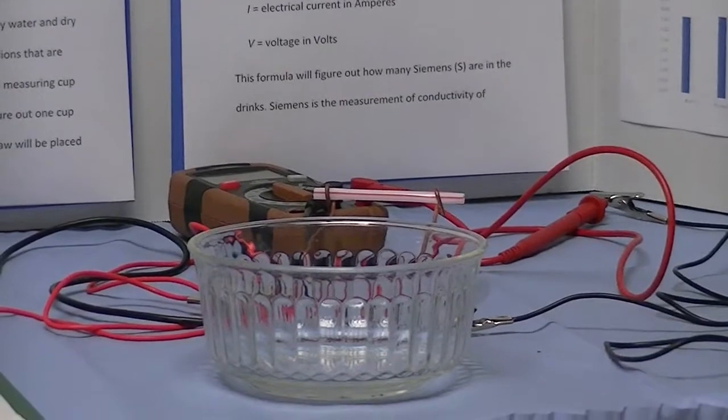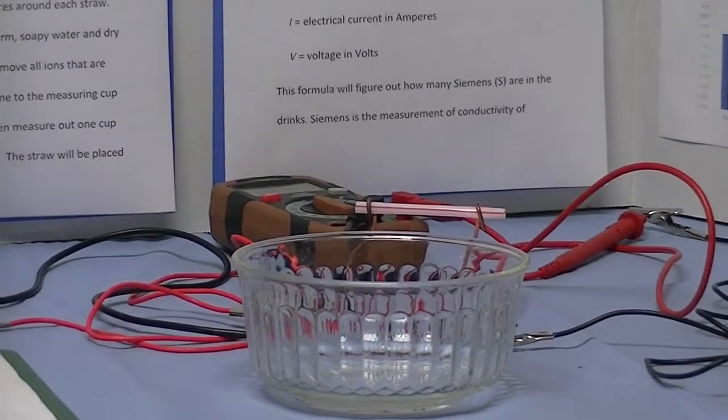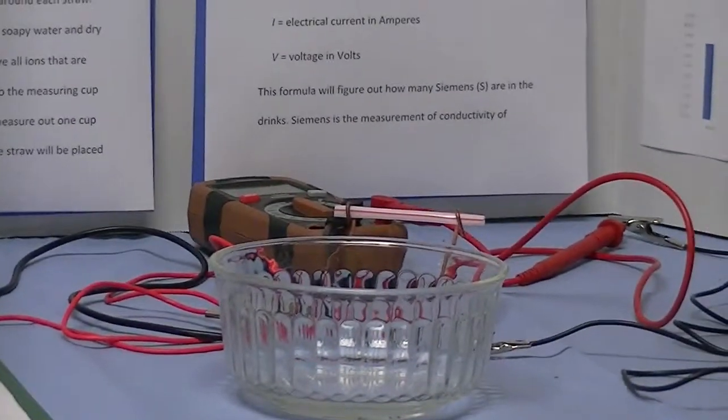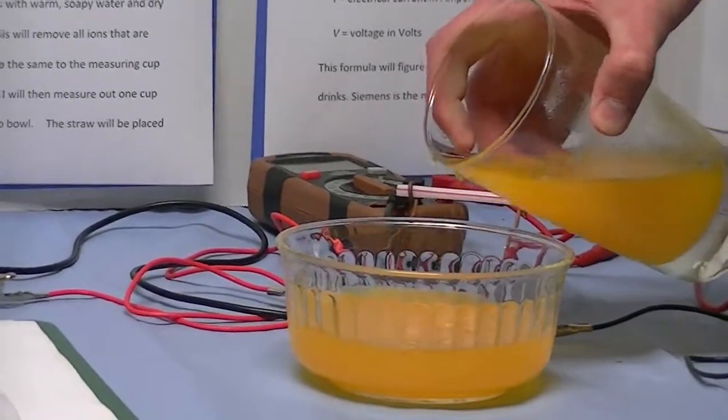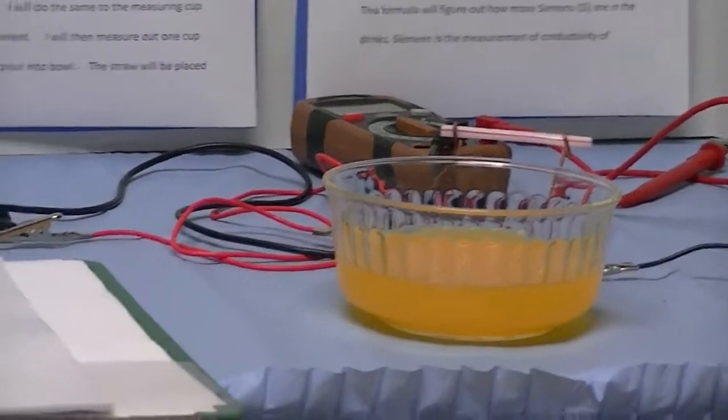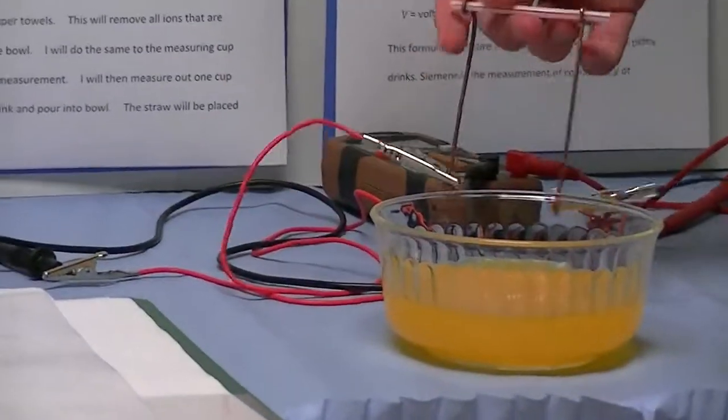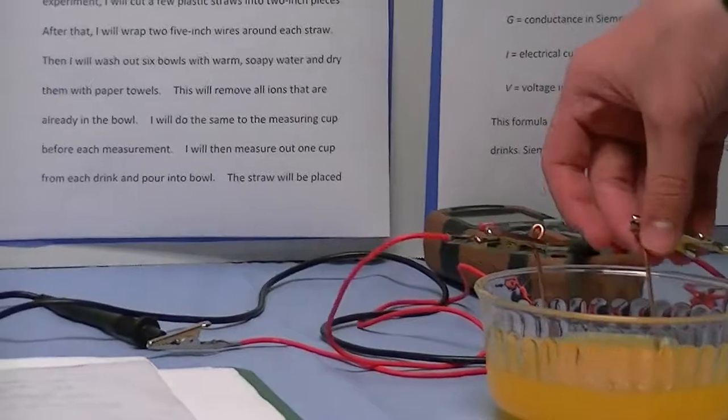I then measured out one cup of each drink and poured it into the bowl. The straw was then placed into the bowl, allowing the wire to dangle out of the bowl.